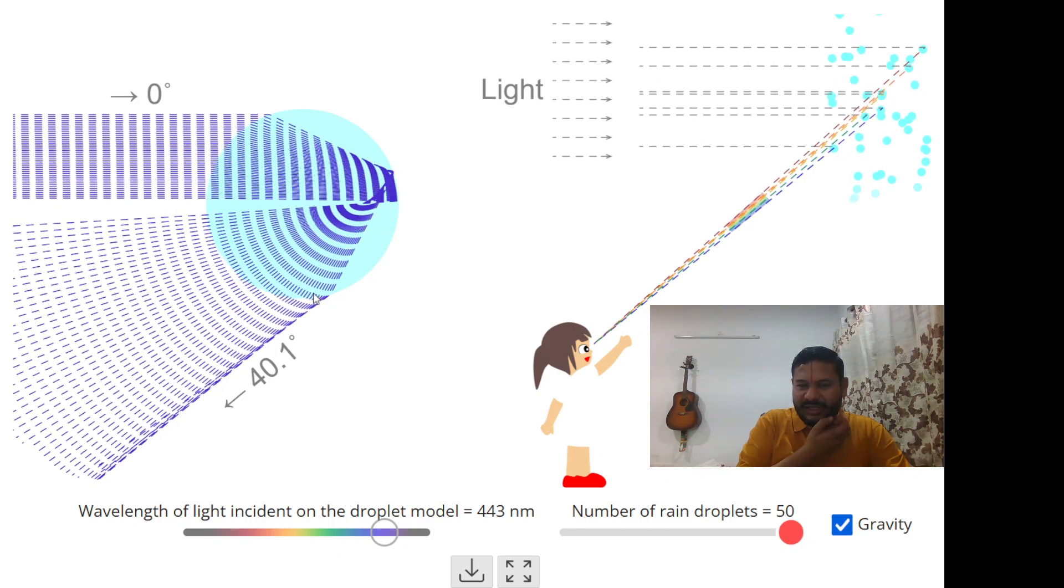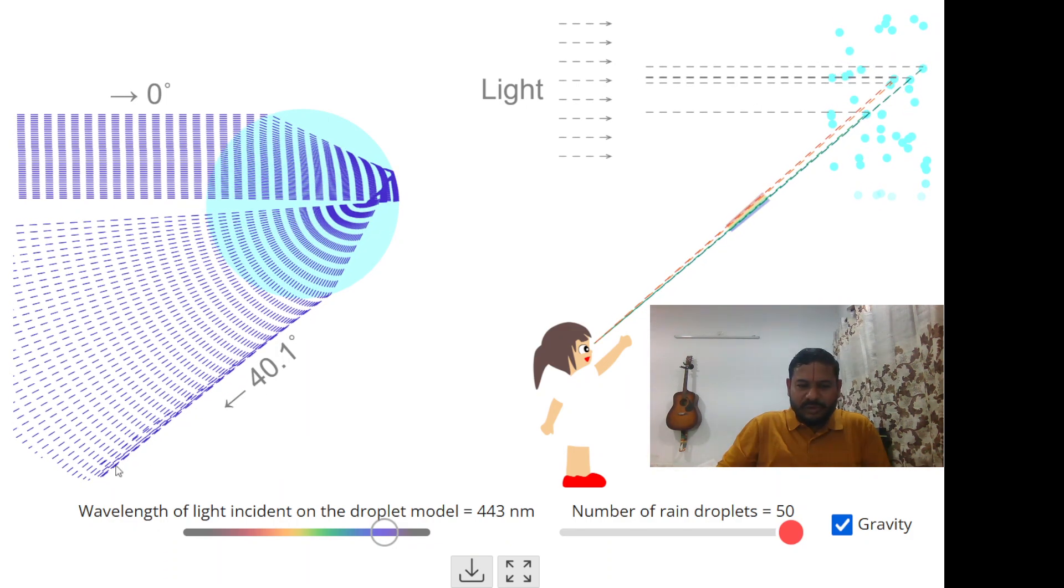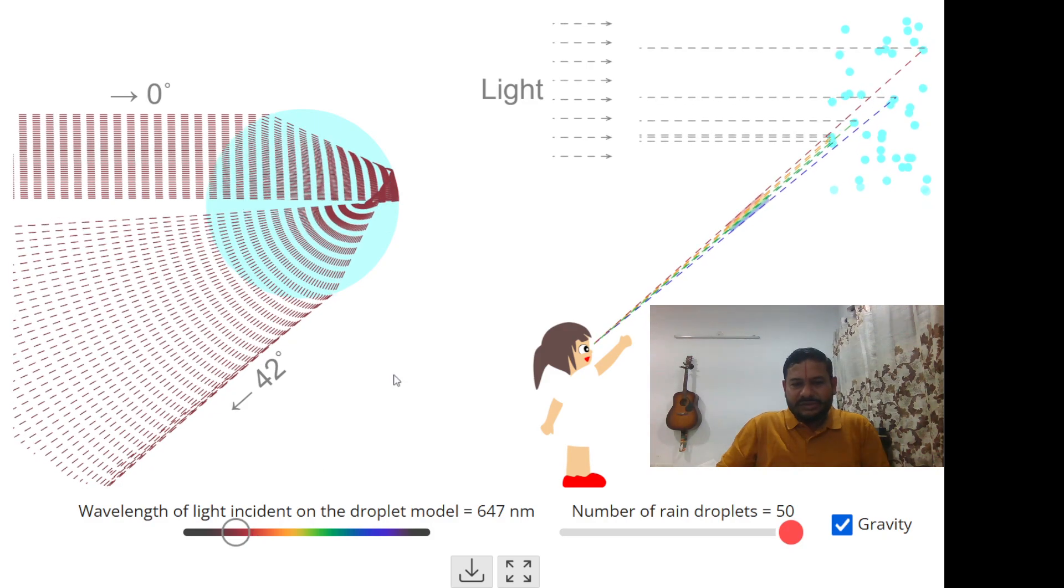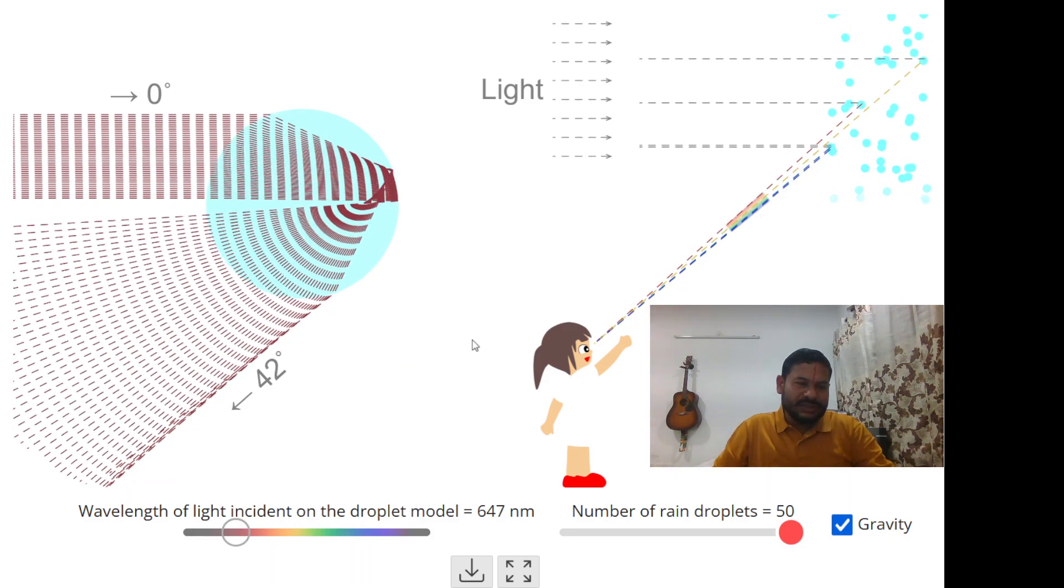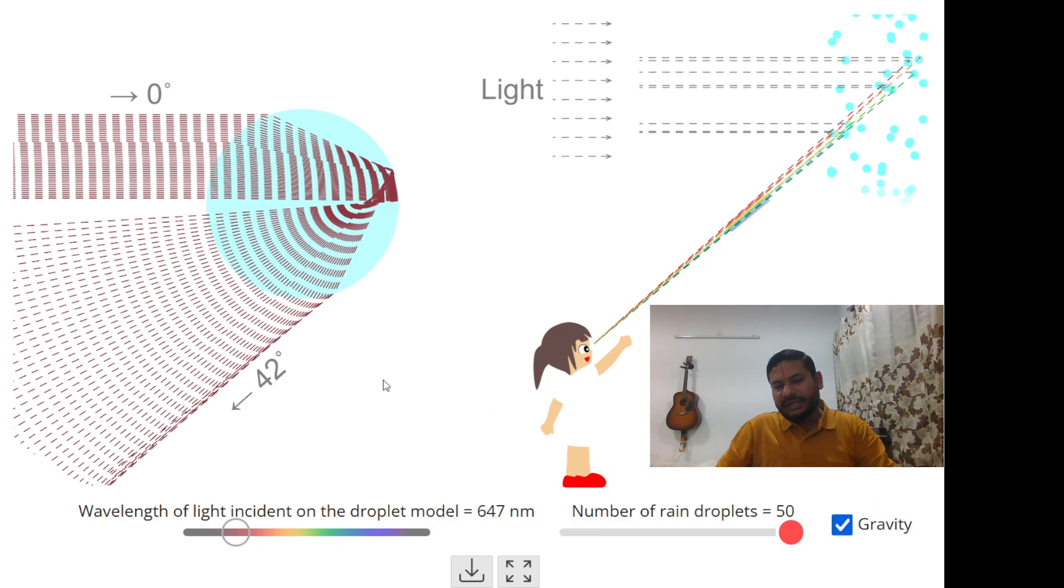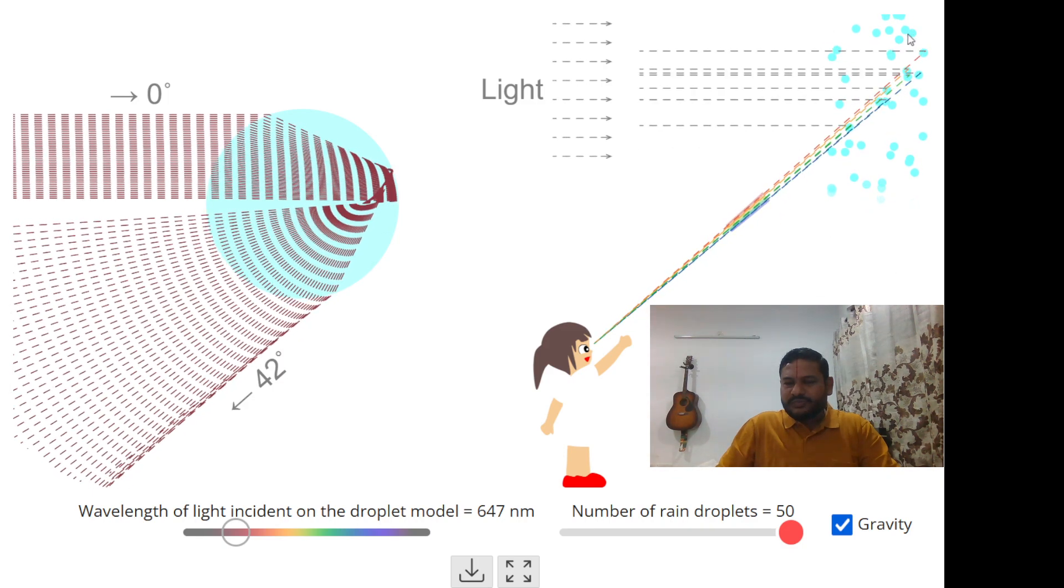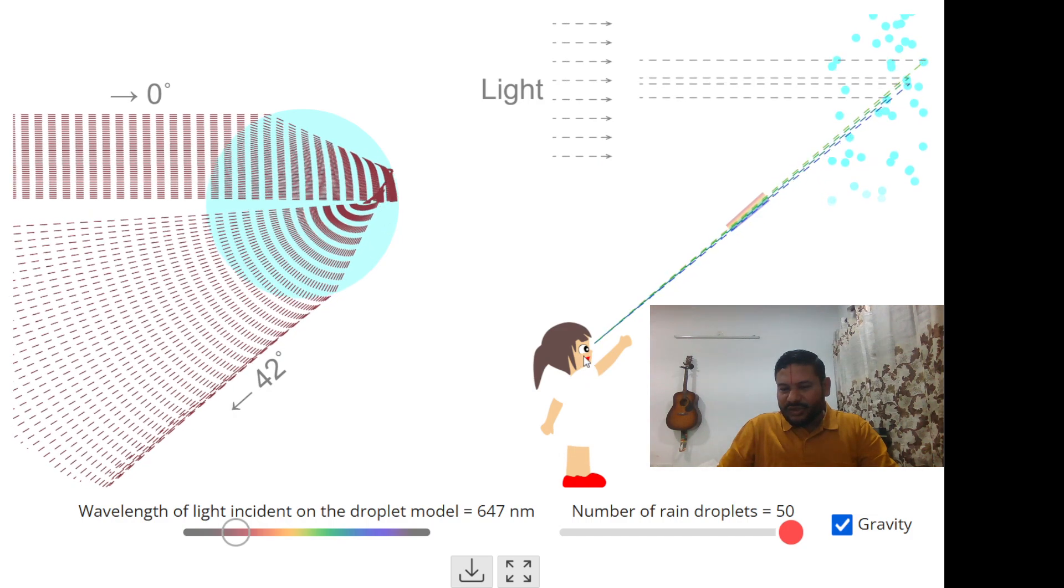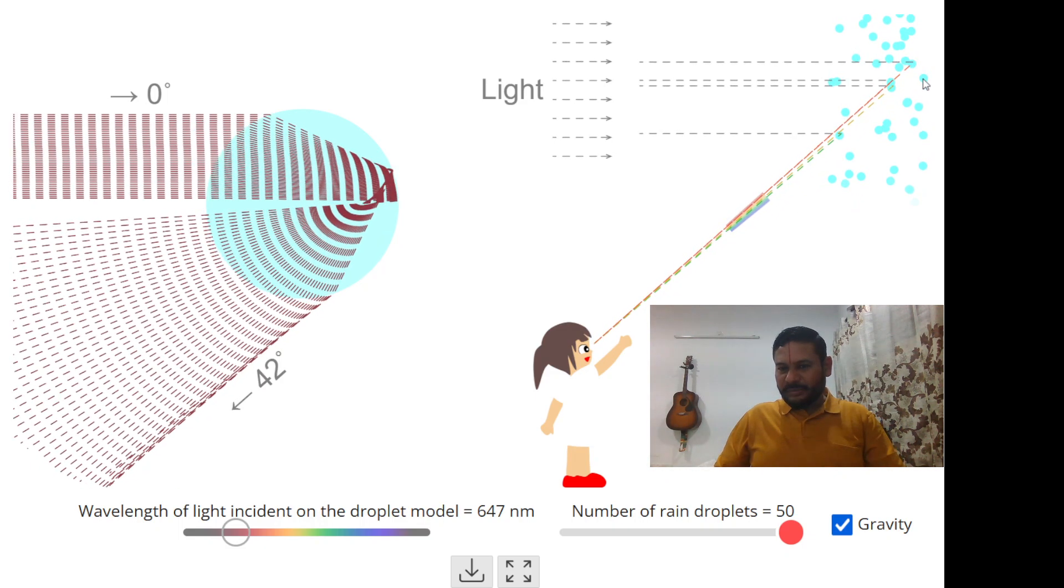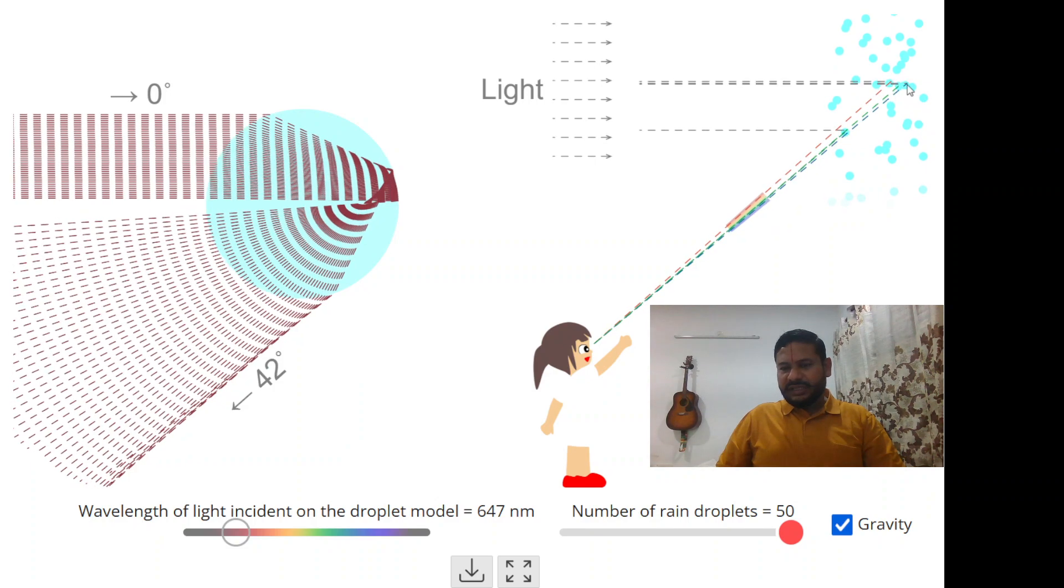So now which color we will see on the top and which color we will see at the bottom. If you see elevation of the blue color from horizontal is 40 degree. And elevation of the red color from the horizontal is about 42 degree. So that's why we will see red color above. To see red color, we have to look at an elevation of 42 degree. Whereas to see the blue color, we have to look at an elevation of around 40 degree. So here you can see on the right hand side, so many rain drops are there. And the light which is coming to the eye of the observer is not from the same drop. So blue color is coming from some other drop and the red color is coming from some other drop. And that's why you are seeing a spectrum. At different angles, you are seeing different colors over here.